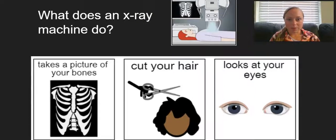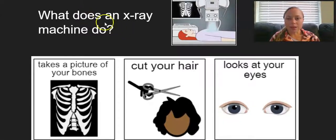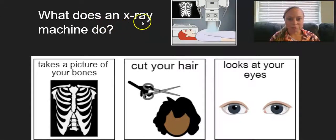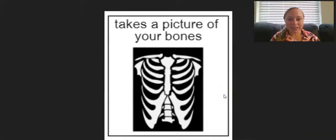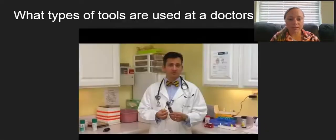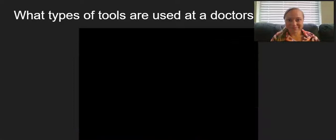So, let's answer a question about what we just read. What does an x-ray machine do? You see this picture? This is a picture from our story we just read. So we did talk about an x-ray machine, but we didn't call it an x-ray machine. But do you remember what this machine did in the story where you saw this picture? Does it take a picture of your bones? Does an x-ray machine cut your hair? Or does an x-ray machine look at your eyes? Make a choice. Great! An x-ray machine takes a picture of your bones.